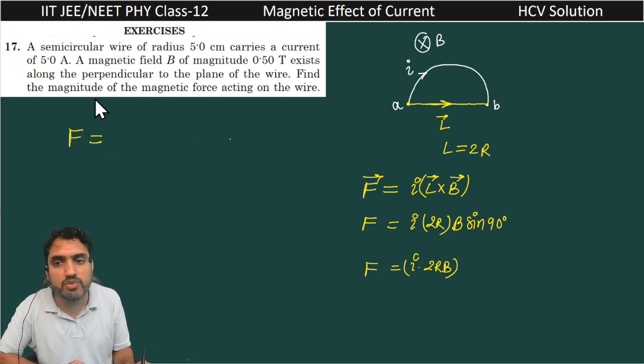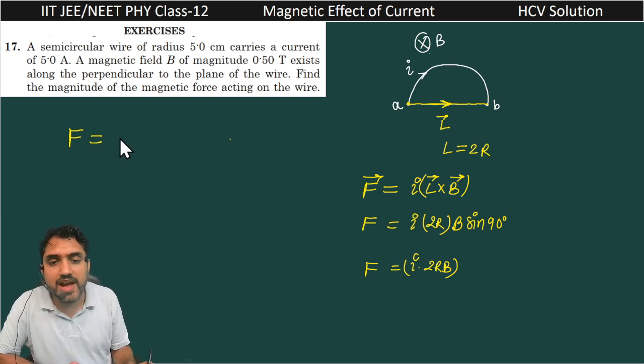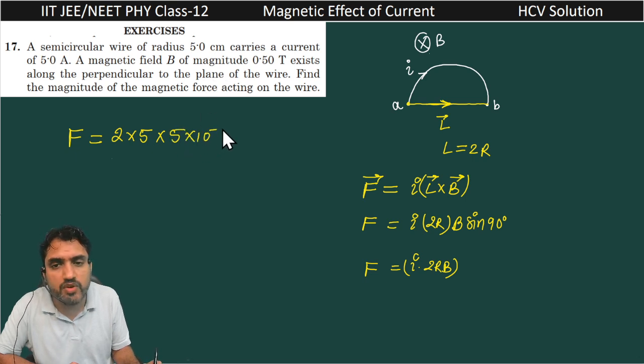If we are finding the magnitude, the magnitude is I into 2R into B. So 2 as it is, what is the value of I? That is 5 amperes. And this radius is equal to 5 centimeters, so 5 into 10 raised to power minus 2, because you want to convert it into meters. And the magnetic field is 0.5. What is the meaning of 0.5? That is 1 by 2. So this 0.5 and 2 will cancel out, and we will get 25 into 10 raised to power minus 2.